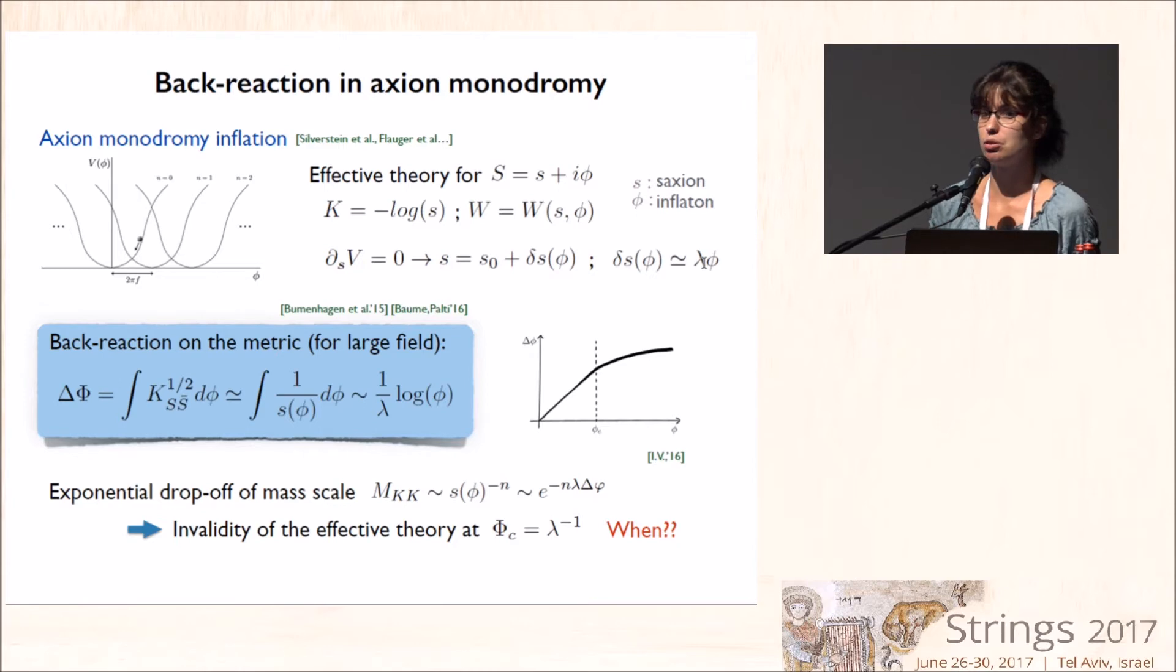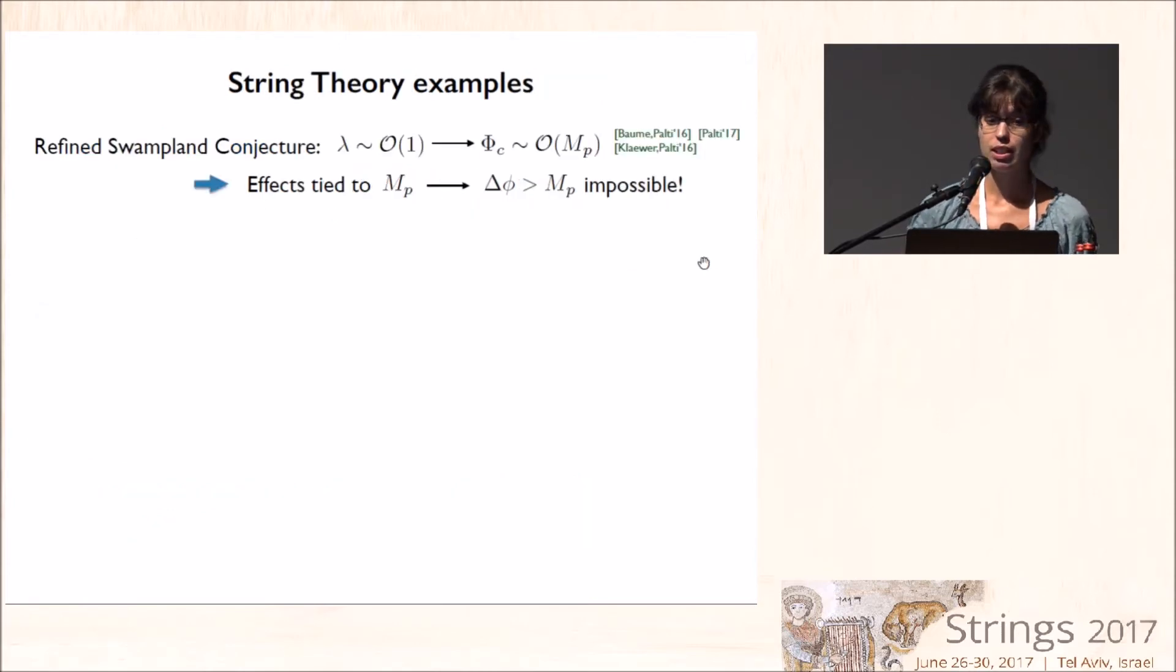So the main question is, what is lambda? When does this happen? So the refined swampland conjecture formulated by Eran says that lambda is always of order one, which means that the effective theory always breaks down at the Planck scale, and we cannot have transplanckian field variations.